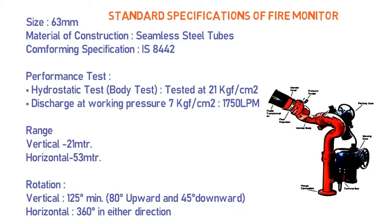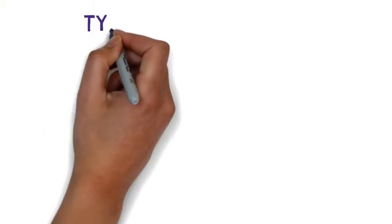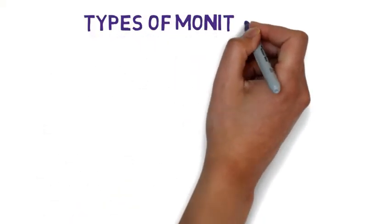You can project the monitor in a vertical or horizontal direction. Vertically, you can project up to 21 meters. Horizontally, you can reach the water up to 53 meters. The rotation of the fire monitor is either vertical — 125 degrees — or horizontal — 360 degrees.